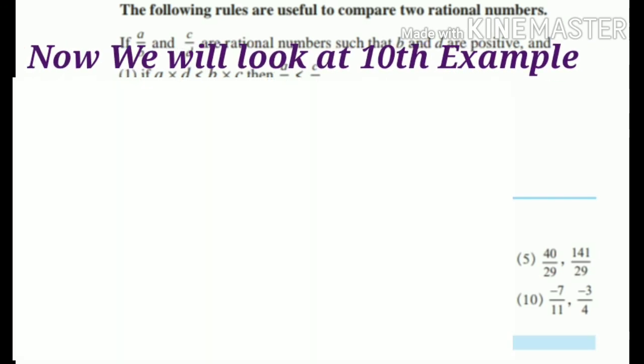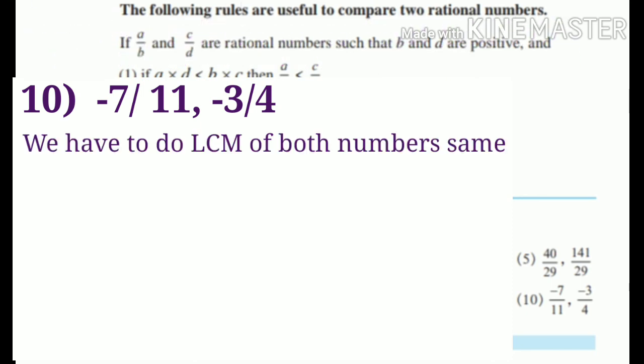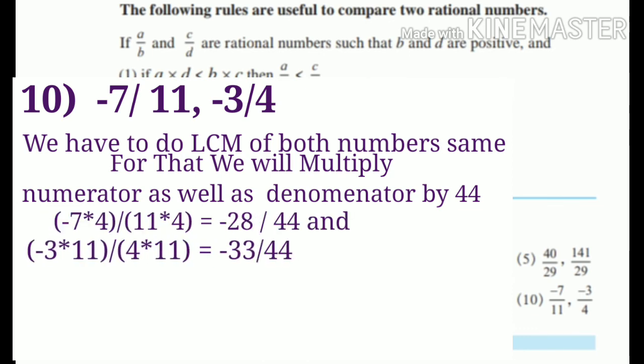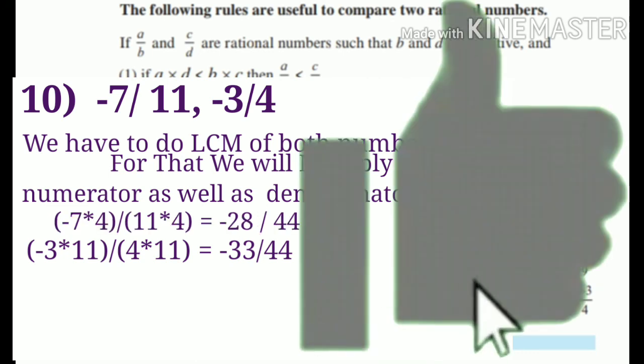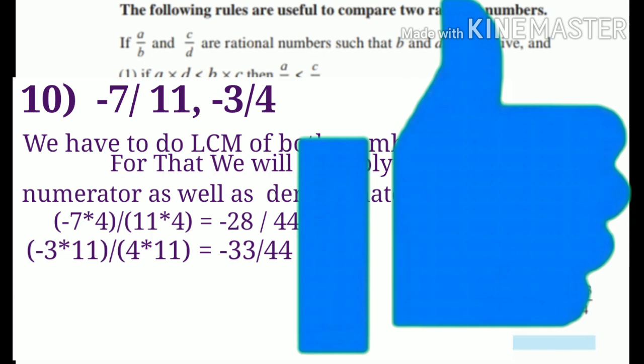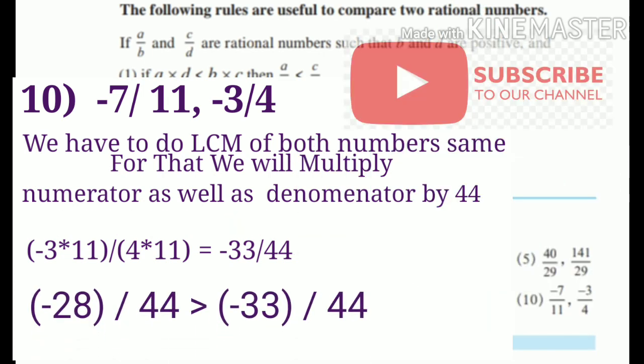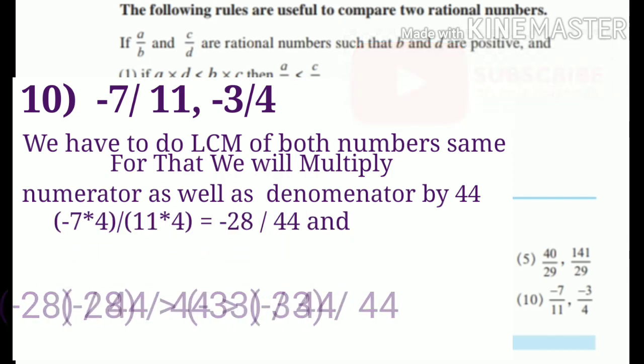Now, we will look at 10th example. 10th example is minus 7 by 11 comma minus 3 by 4. We have to do LCM of both numbers same. For that, we will multiply numerator as well as denominator by 44. Minus 7 into 4 divided by 11 into 4 is equal to minus 28 by 44. And minus 3 into 11 divided by 4 into 11 is equal to minus 33 by 44. So, answer will be minus 28 by 44 is greater than minus 33 by 44.